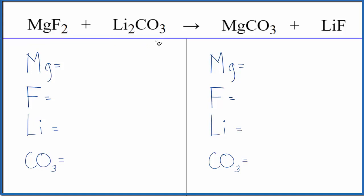So first to balance the equation, let's count the atoms up. We'll use a bit of a trick to make this easier. We have one magnesium, two fluorine atoms, two lithium atoms, and the CO3. This is a polyatomic ion. We have it here and here. So we're just going to count this as one thing. That'll make the balancing a little bit easier. So we have one carbonate ion.